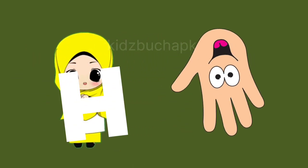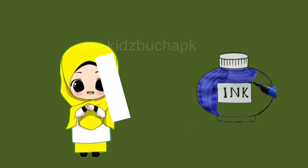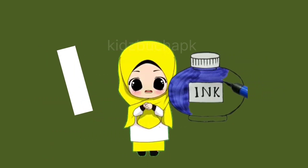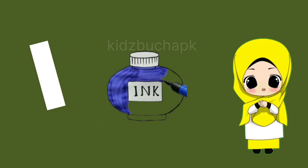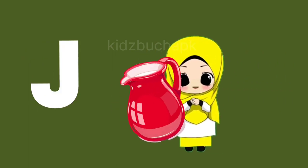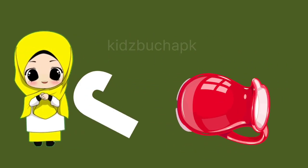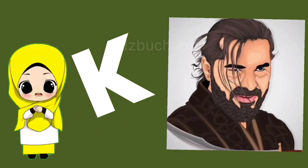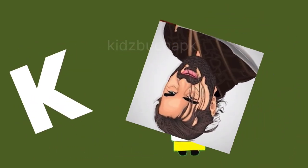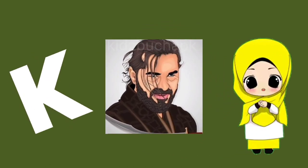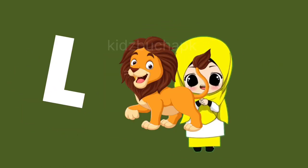I for ink, ink means siahy. J for jug, jug means jug. K for king, king means baadshah. L for lion, lion means share.